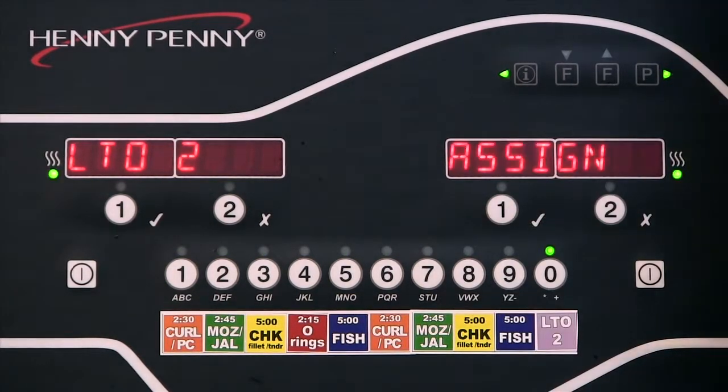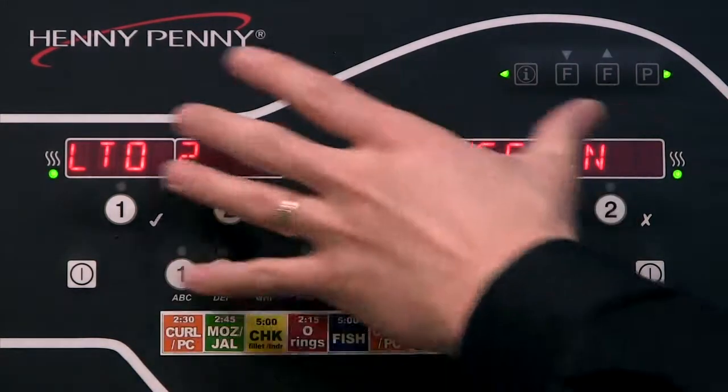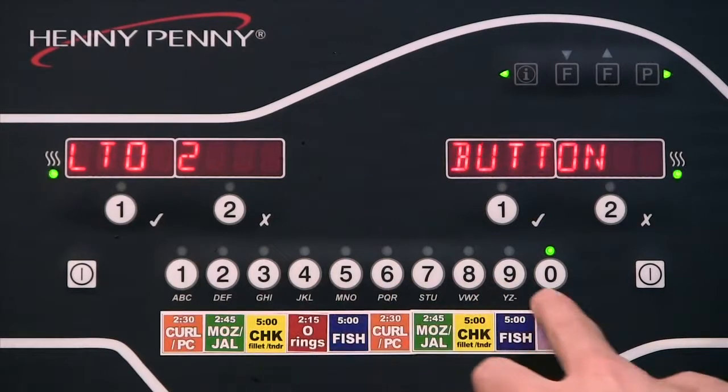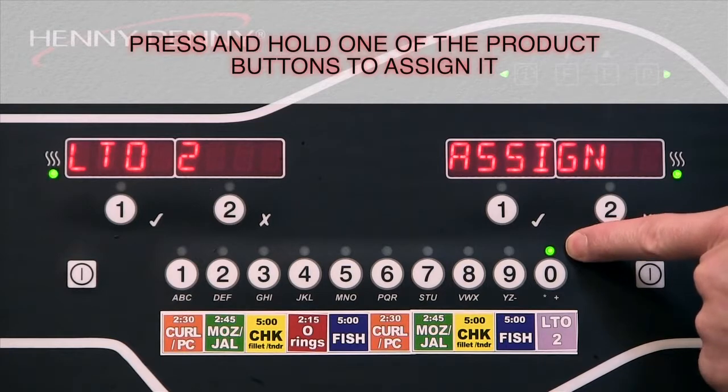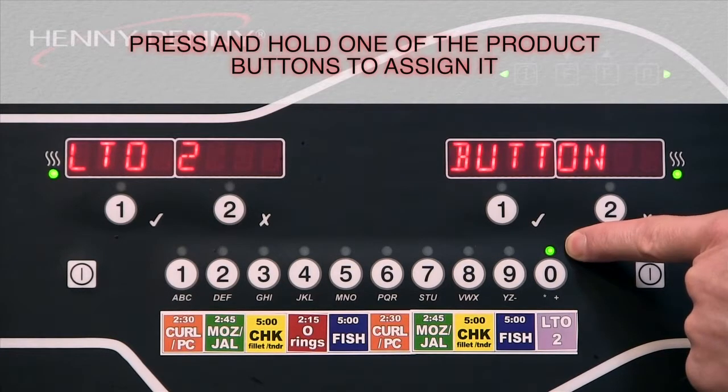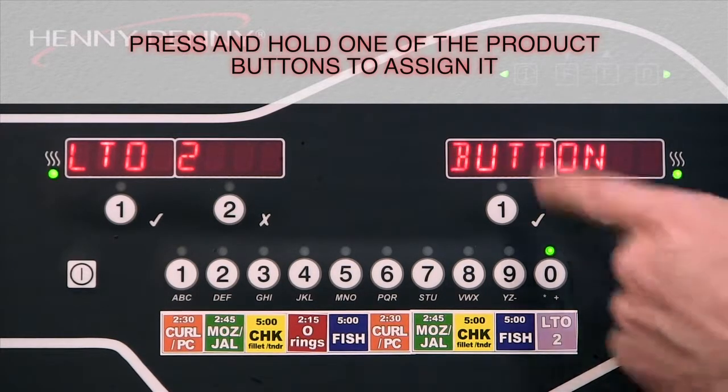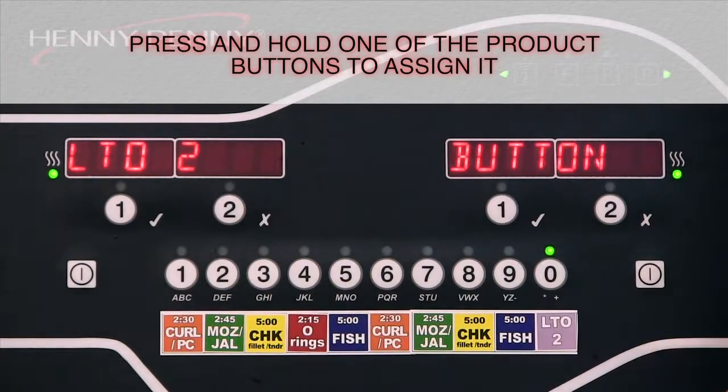The next step is assign button. By assigning a button, this makes sure that our product here is going to be somewhere down here where we can activate that product. Right now, we know it's assigned because the LED is lit above button 0. When the LED is on, that means it's assigned already, so we don't have to change anything.